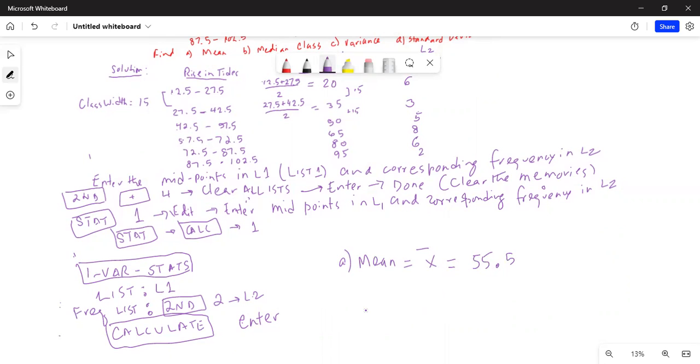And then it says standard deviation. Remember, this is sample of 30 selected places in the United States where they measured the rise in tide. Only 30 selected places, so this is sample. When we talk about standard deviation, we are only interested in SX, sample standard deviation, because we have only selected 30 of the places.